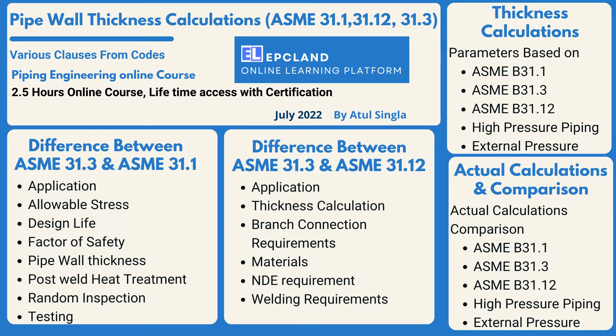We'll try to understand each and every parameter. We'll look into every clause and how we can get all the values associated with those parameters. We'll cover each and every aspect with respect to all five categories — three codes and two additional categories.